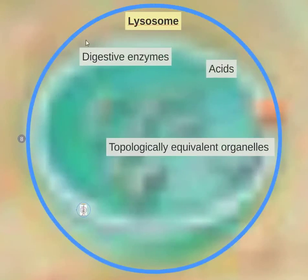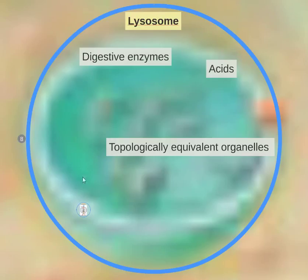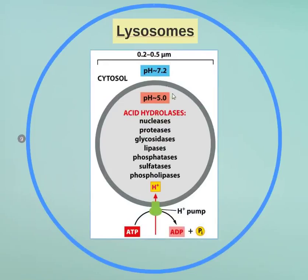The lysosome contains digestive enzymes and acids. There's the term 'topologically equivalent,' which means that from this point on — lysosomes, endoplasmic reticulum, all that — they have the same membrane. The lysosome is noticeably more acidic than the rest of the cell. It contains enzymes that will degrade DNA and RNA, proteins, sugars, and fats, and makes itself acidic using ATPase proton pumps — it takes ATP and pumps in acids.